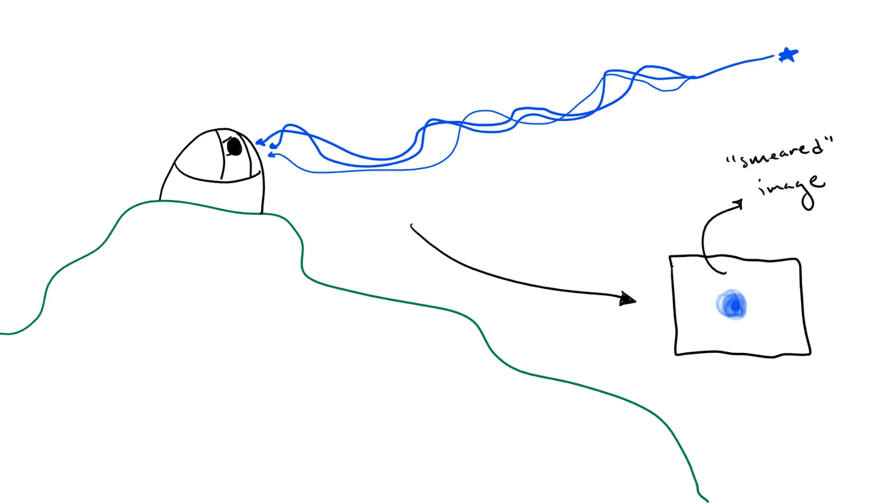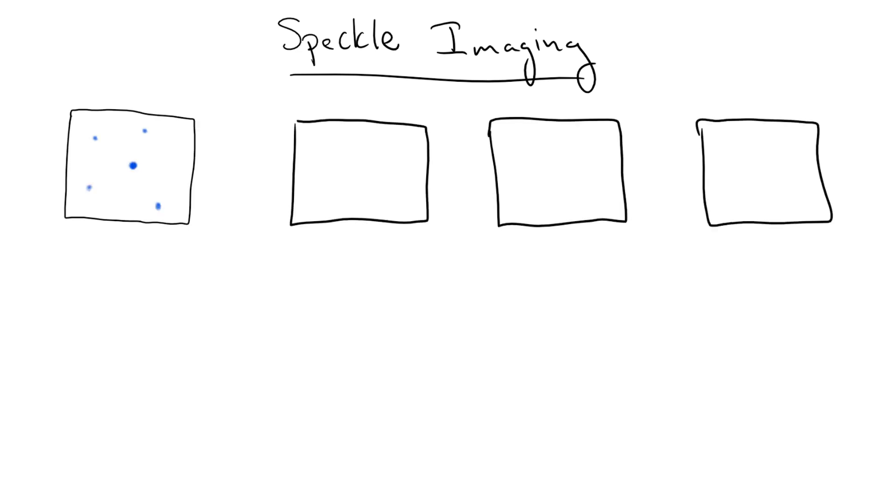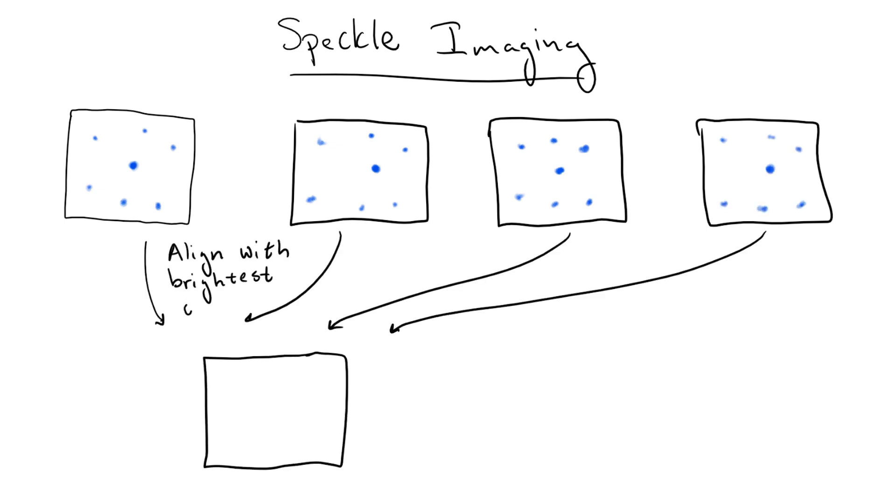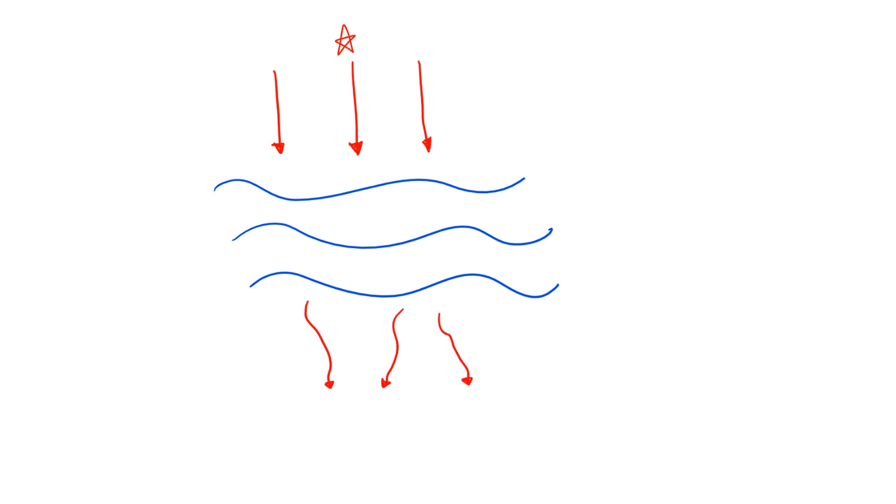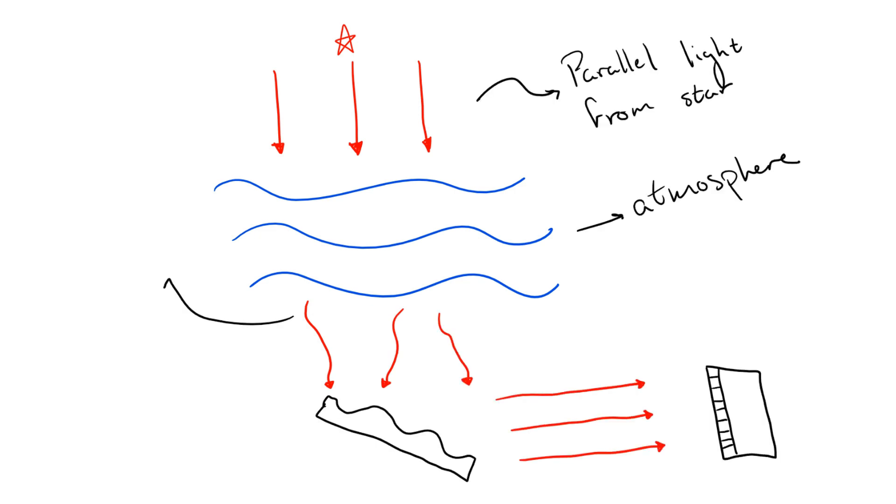What Genzel and Ghez were able to do was use a technique known as speckle imaging for near-infrared wavelengths. The basic idea is to take lots of very short exposure images, shift them so that the brightest objects in all of them align, and then average them out. This, along with adaptive optics where mirrors are deformed in real time to account for shifting of images from the atmosphere, helps eliminate the smearing effect of the atmosphere, making it possible to reach much higher resolutions.